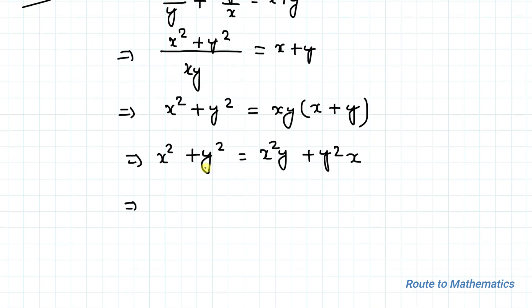Now bringing this to the right-hand side, we can write x squared y minus x squared plus y squared x minus y squared equals 0. This implies, let's take x squared common from these two terms.